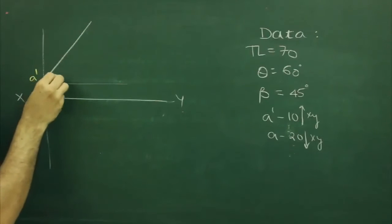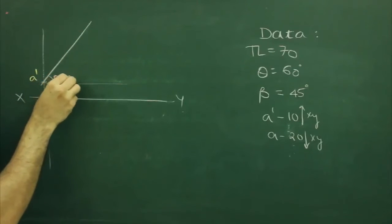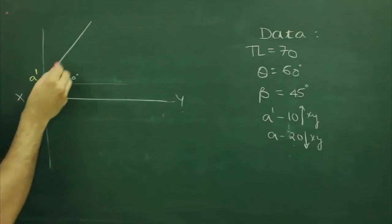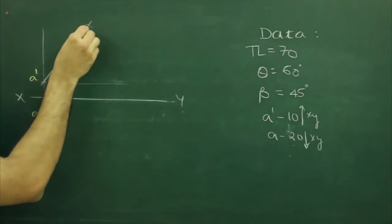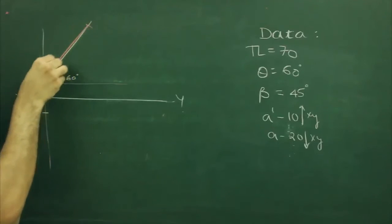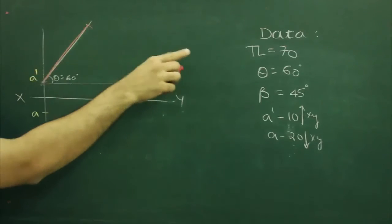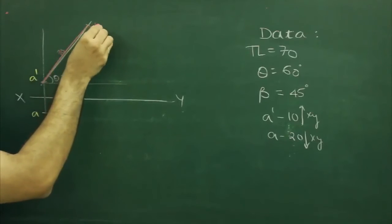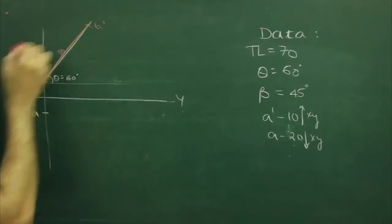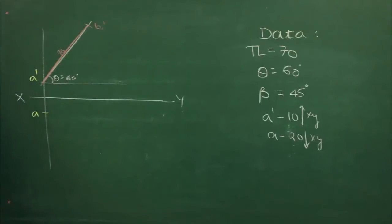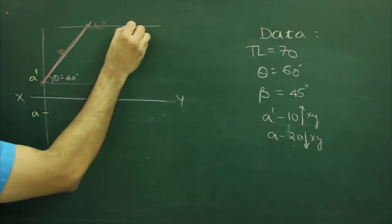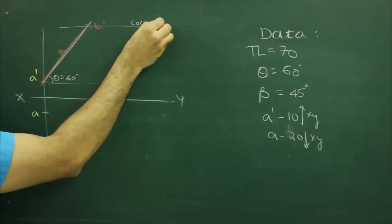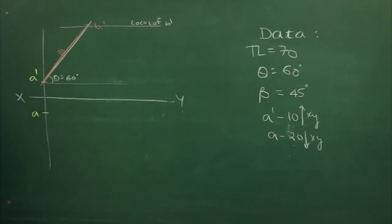First we will draw theta, and we have the true length as well. We will cut true length of 70, so that point would be b1-dash. So we got the locus of b-dash.